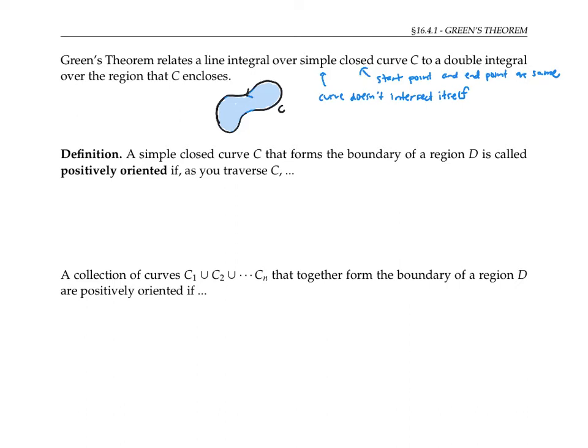A simple closed curve that forms the boundary of a region D is called positively oriented if, as you traverse C, the region always lies on your left.